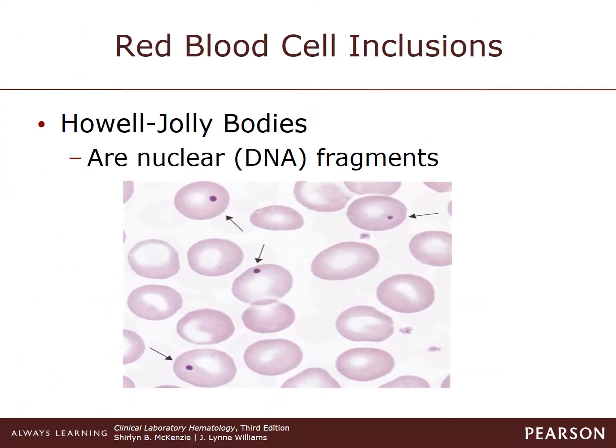Howell-Jolly bodies are small, round bodies composed of DNA, usually located eccentrically in the red cell. They can occur singly, but very rarely there are more than two per cell. They stain very dark purple on the Wright stain and can be noted due to post-splenectomy and certain types of hemolytic anemias or megaloblastic anemia.